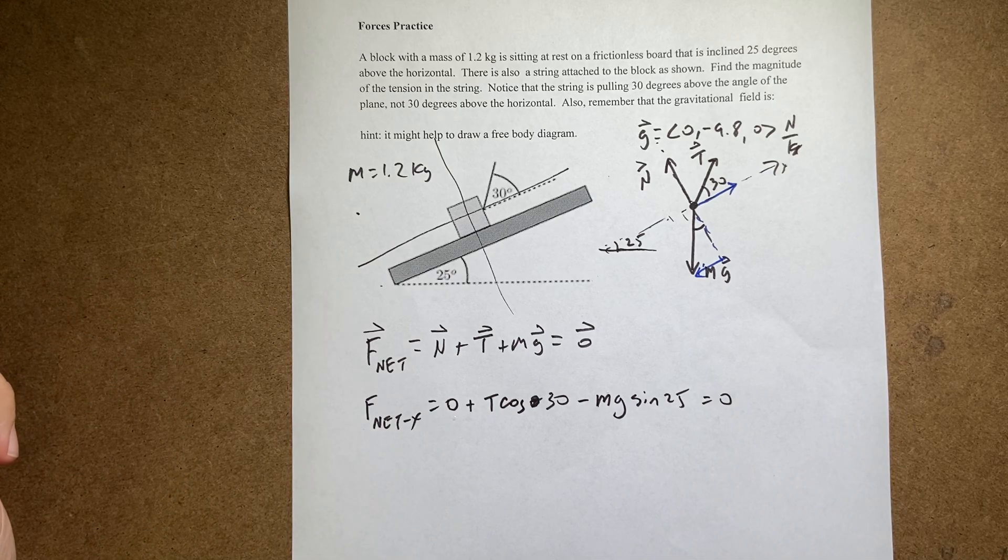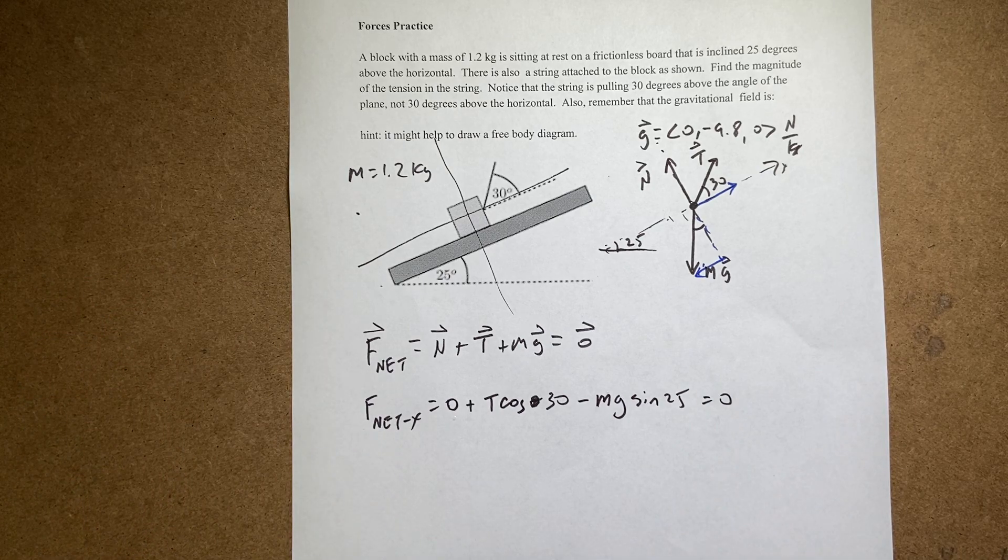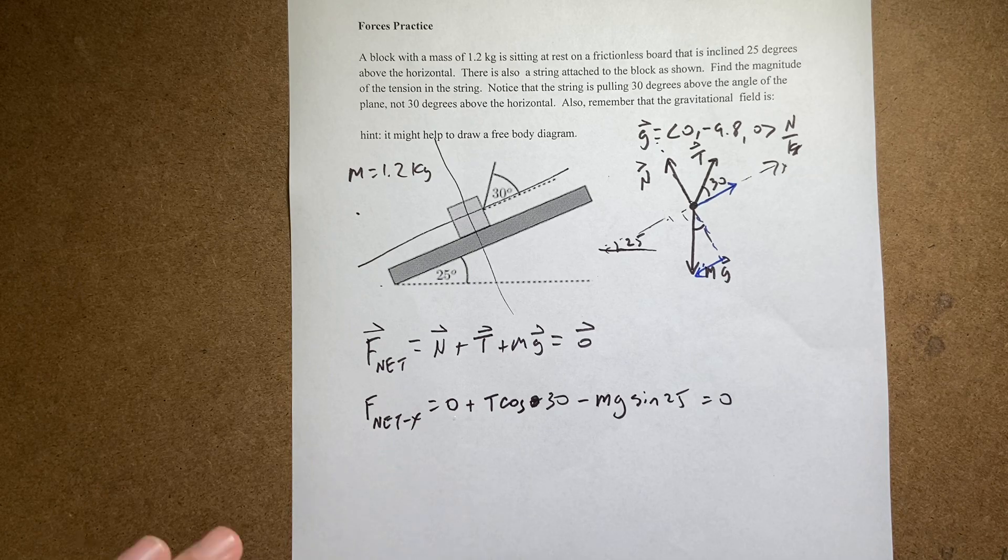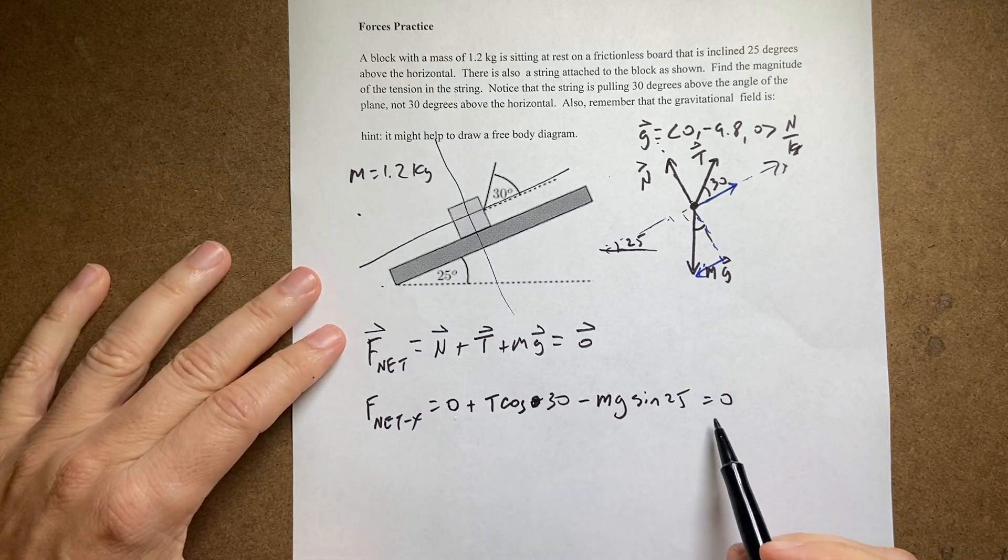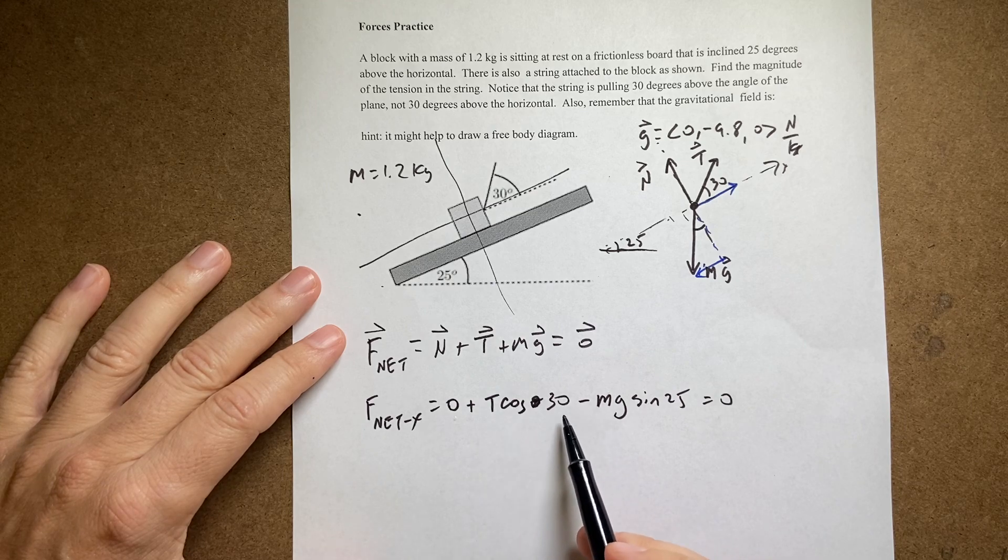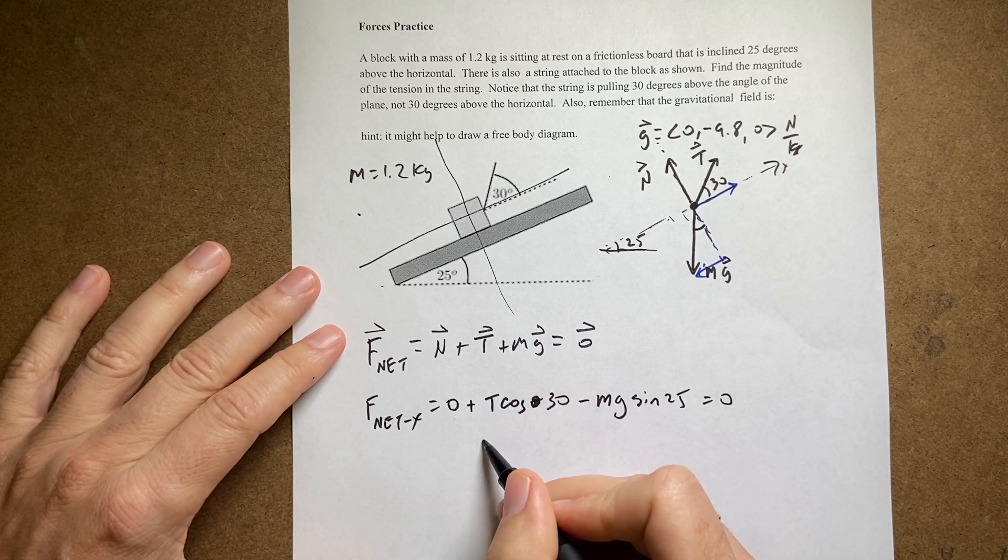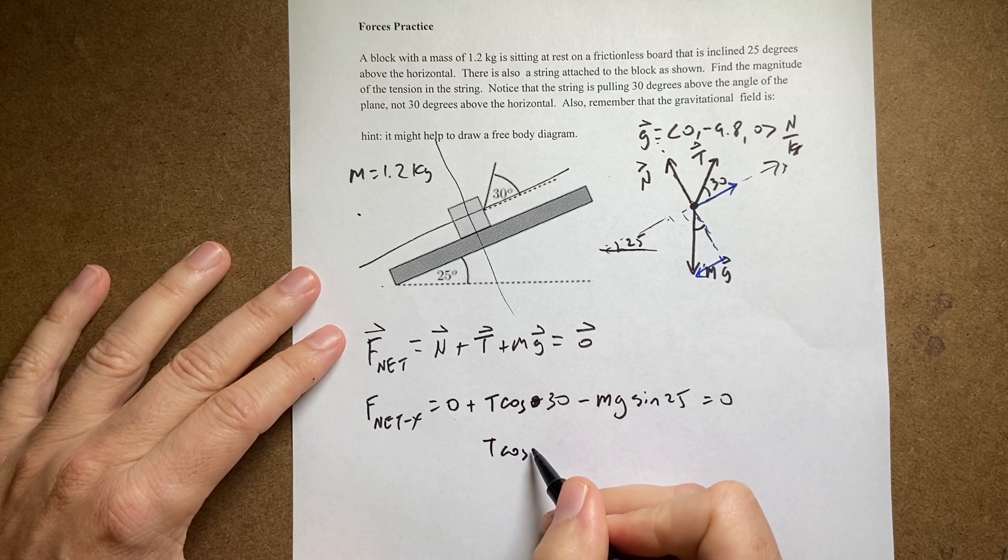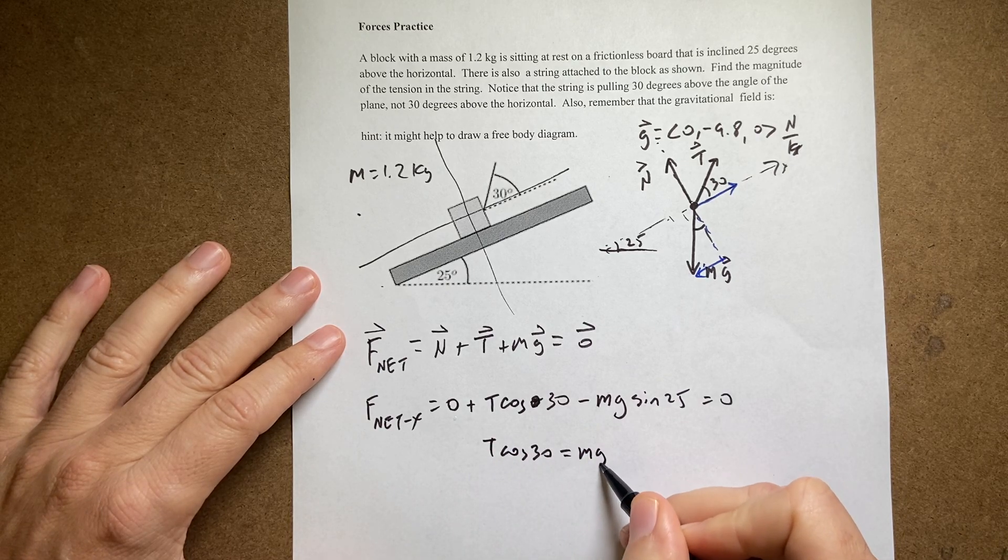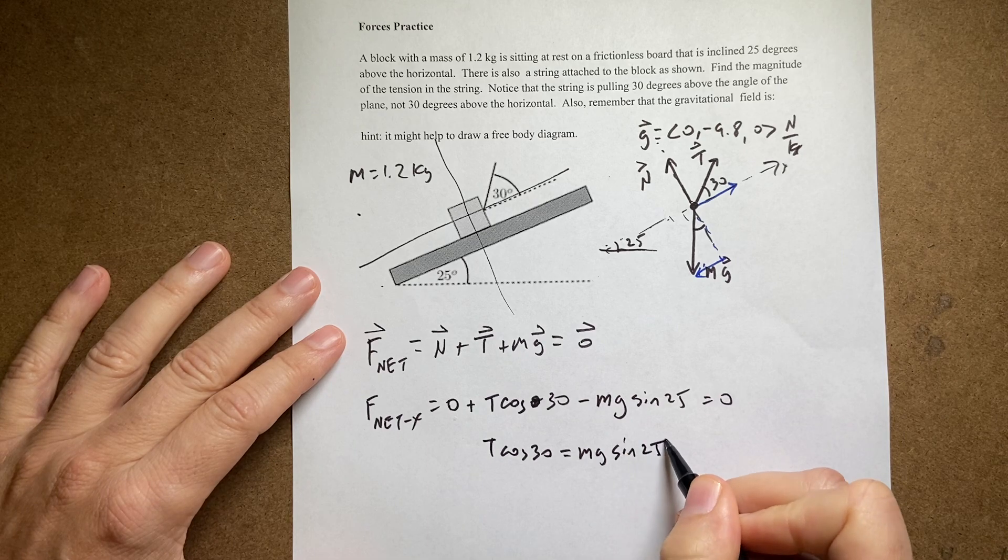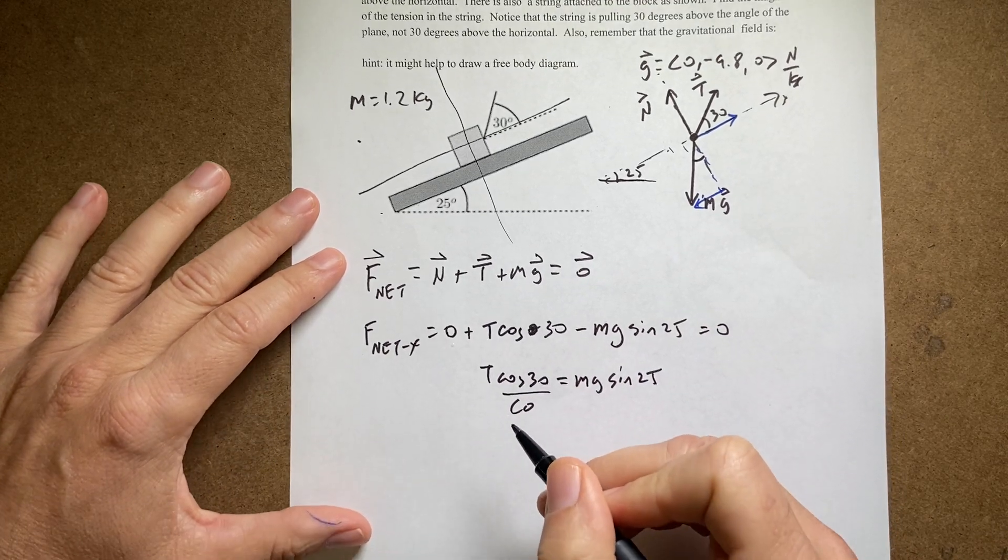Now from that can I solve for what I want? And I want the magnitude of the tension. Well that's the only thing I don't know. So let's go ahead and solve for that. Let's add mg sine 25 to both sides. And I get t cosine 30 equals mg sine 25. Divide both sides by cosine of 30.